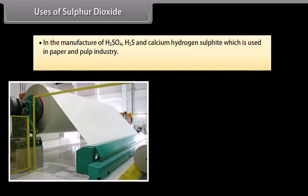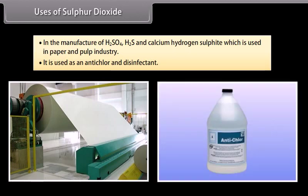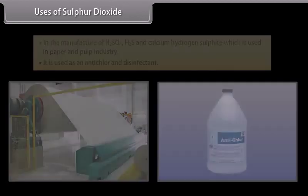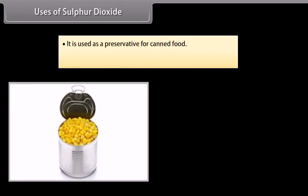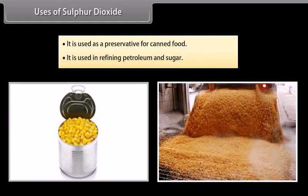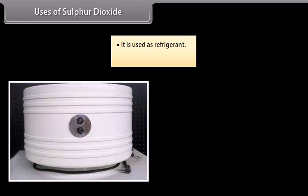Uses of sulphur dioxide. The important uses of sulphur dioxide are following: In the manufacture of H2SO4, H2S and calcium hydrogen sulphide which is used in paper and pulp industry. It is used as an anti-chlor and disinfectant. It is used as a preservative for canned food. It is used in refining petroleum and sugar. It is used as a refrigerant. It is used in bleaching.